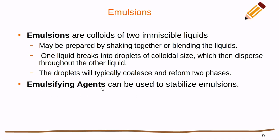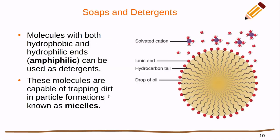Emulsifying agents can be used to stabilize emulsions. They have a certain geometry that allows them to stabilize those droplets and keep them from aggregating together. One important example of emulsifying agents is soaps and detergents.